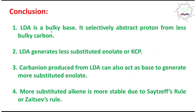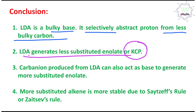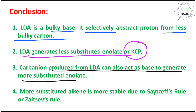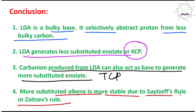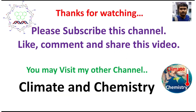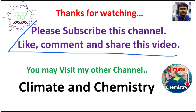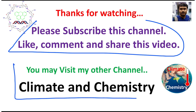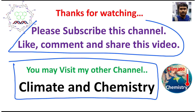In conclusion, what you have learned today: LDA is a bulky base that selectively abstracts a proton from the less bulky carbon. LDA generates the less substituted enolate, the kinetically controlled product (KCP). The carbanion from LDA can also act as a base to generate the more substituted enolate, the thermodynamically controlled product (TCP). Finally, the more substituted enolate is more stable due to Zaitsev's rule. I hope this video was useful. Please help this channel grow, and visit my other channel, Climate and Chemistry, for global warming and climate change videos. Thanks for watching — see you in the next video!